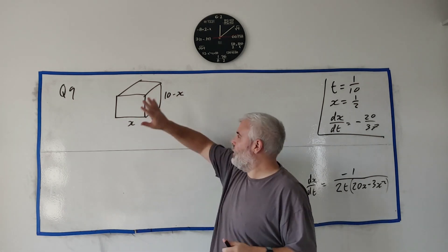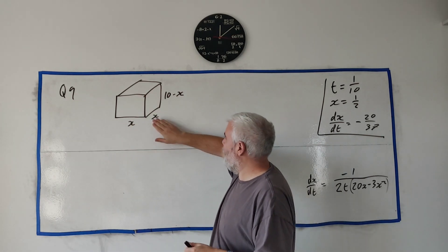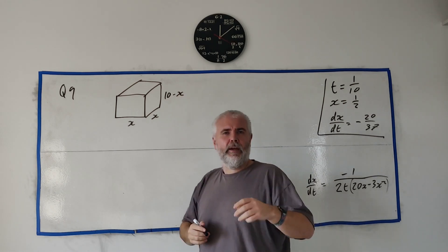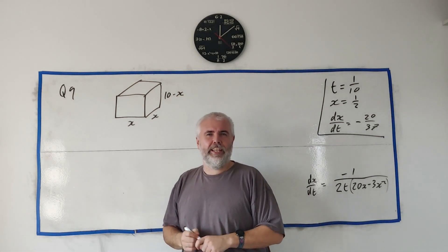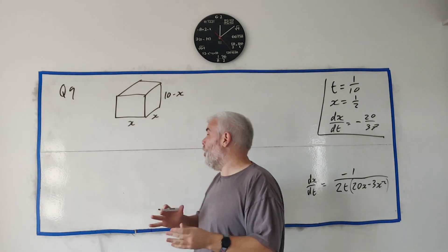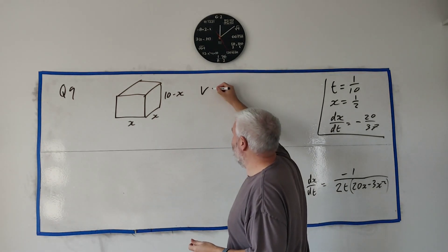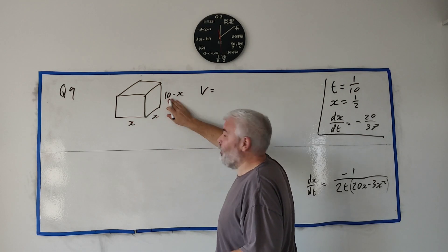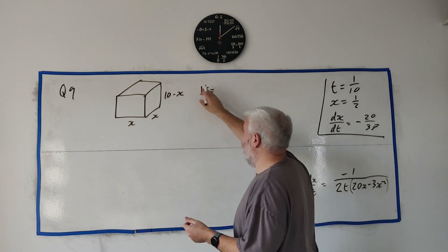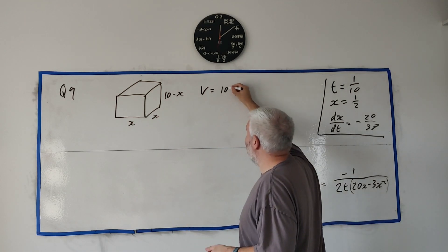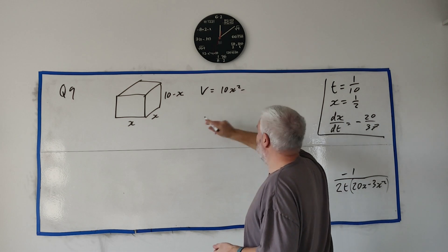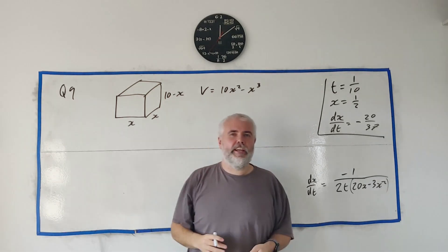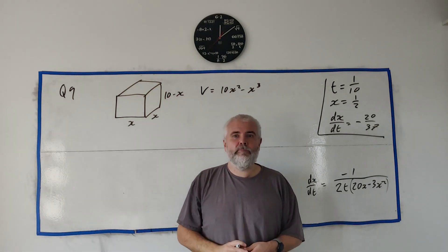They draw us a picture of a box with dimensions x by x by 10x. Reading into the question you'll see volume, so let me write that: volume = x · x · (10x − x²), which cleans up to 10x² − x³. That's the first thing I would jot down.